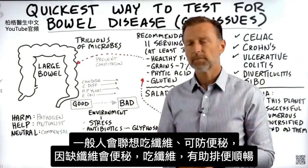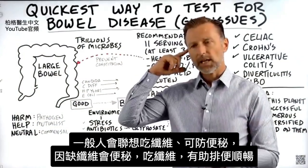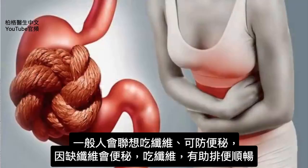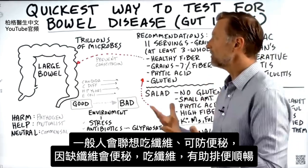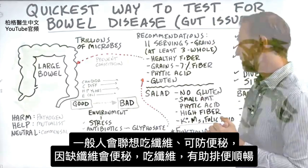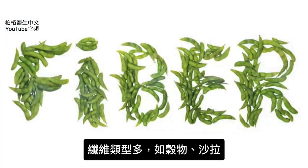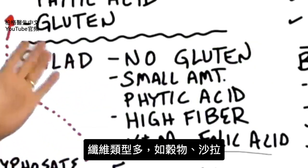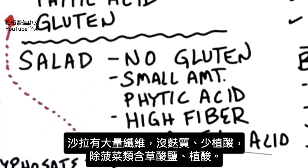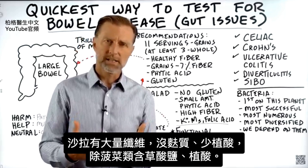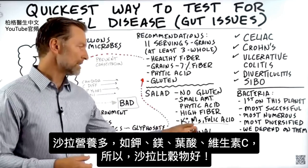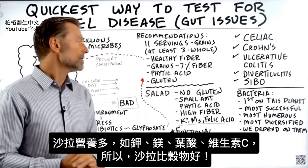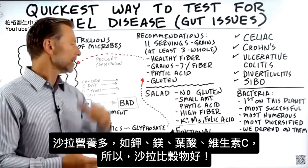When we talk about fiber in general, people associate it with preventing constipation — the idea that constipation is just a lack of fiber, and if you just take more fiber you can go on a regular basis. There are different types of fiber. You have fiber from grain, and you have fiber from salad, which is a good amount of fiber. Plus, salad has no gluten, very little phytic acid, and lots of nutrients — potassium, magnesium, folic acid, vitamin C. So salad is a much better fiber source than grains.